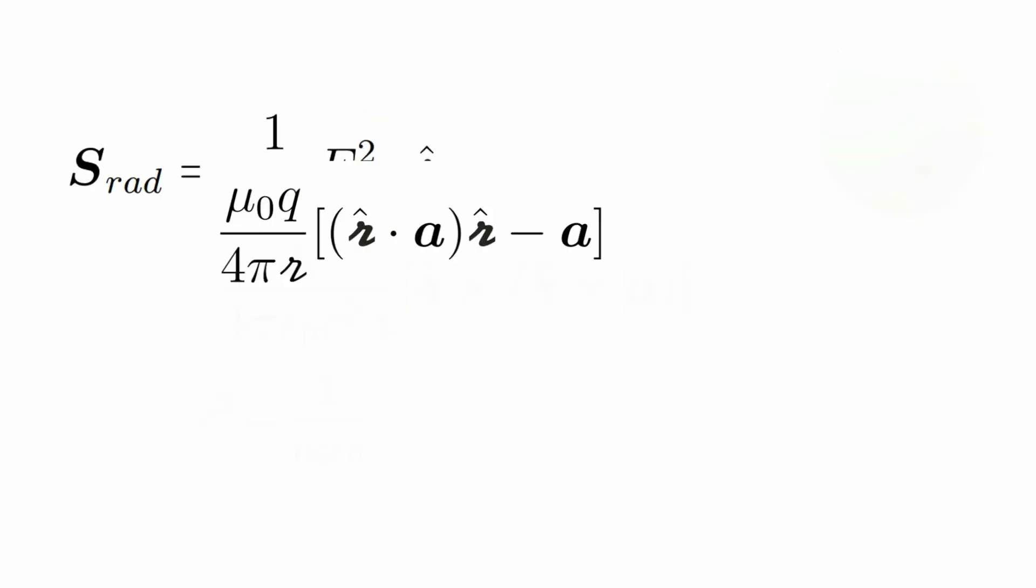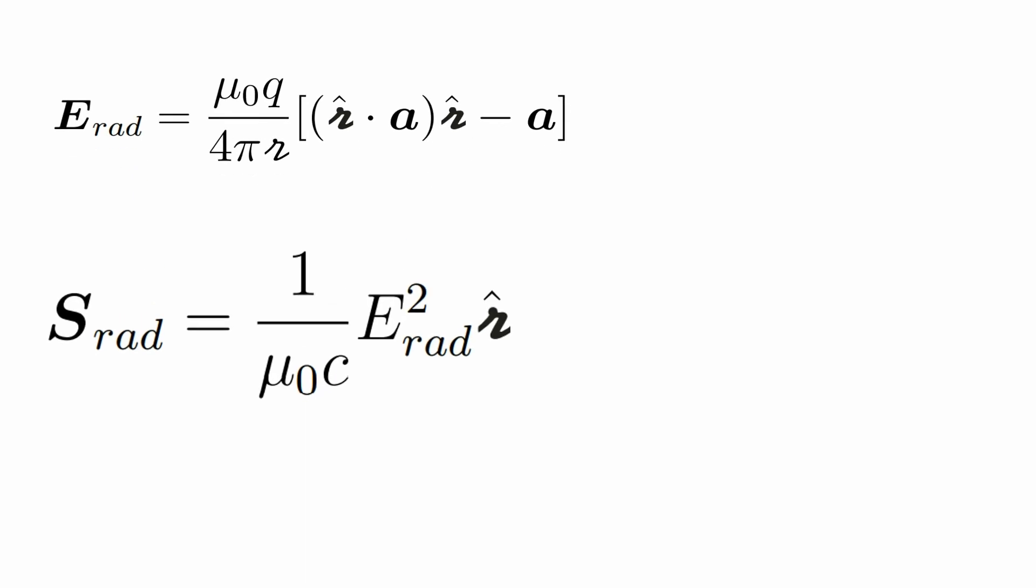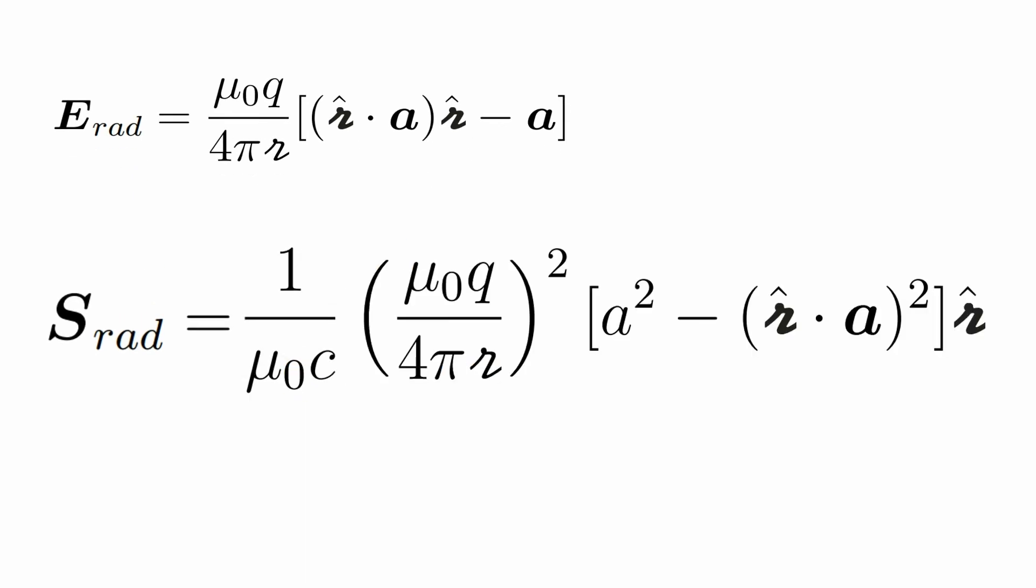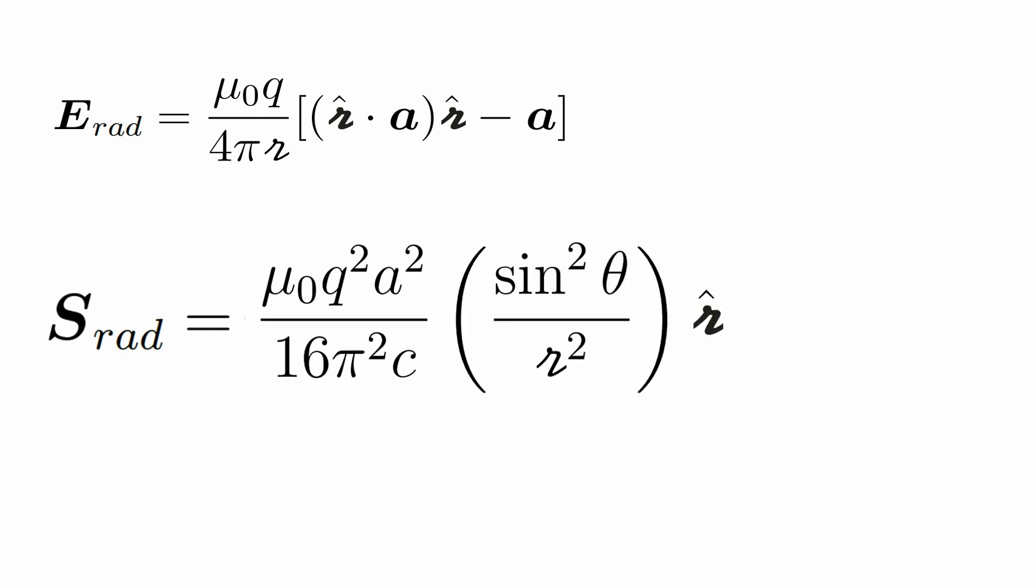We can now substitute the field equation into the Poynting vector. Seeing the value of the dot product between a and the inverse of r, and using the relation between sines and cosines, we finally get a simpler form for the Poynting vector.